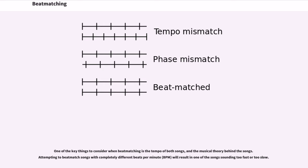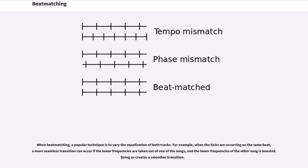When beatmatching, a popular technique is to vary the equalization of both tracks. For example, when the kicks are occurring on the same beat, a more seamless transition can occur if the lower frequencies are taken out of one of the songs and the lower frequencies of the other song are boosted, creating a smoother transition.